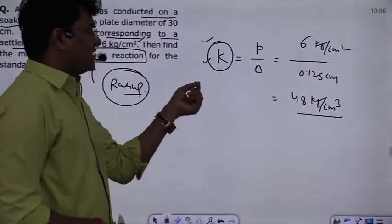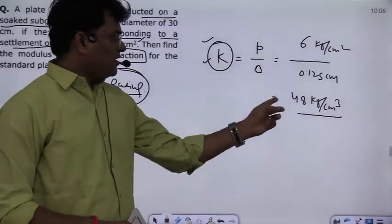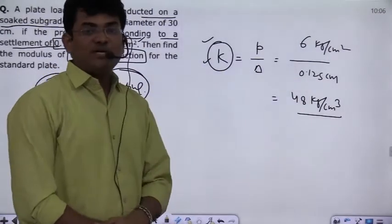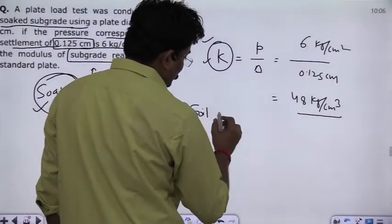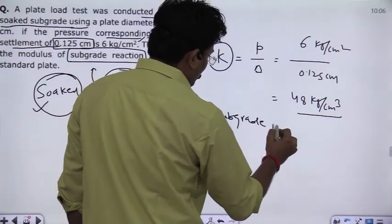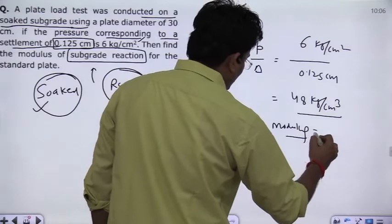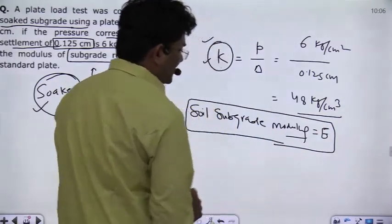This is the soil subgrade reaction. Okay? Remember, soil subgrade reaction is k. What is k? And its unit is kg per cm³. One thing that can confuse is the soil subgrade modulus. If you say soil subgrade modulus, if you say modulus of elasticity, it means E.